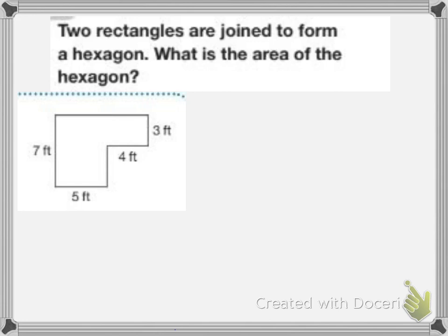So this hexagon can be divided into two rectangles. I can find the area of each rectangle and add it together to find the area of the whole shape.